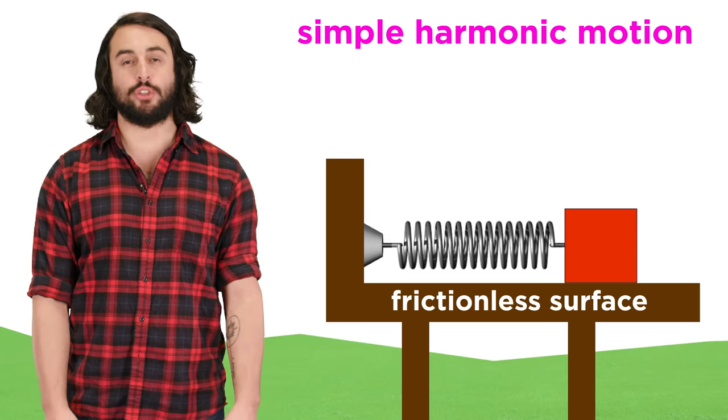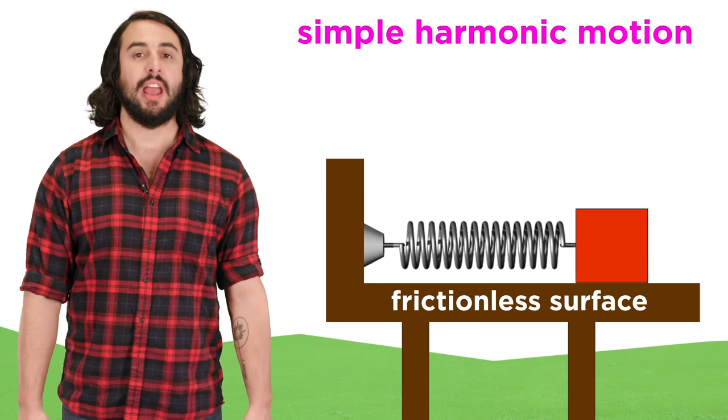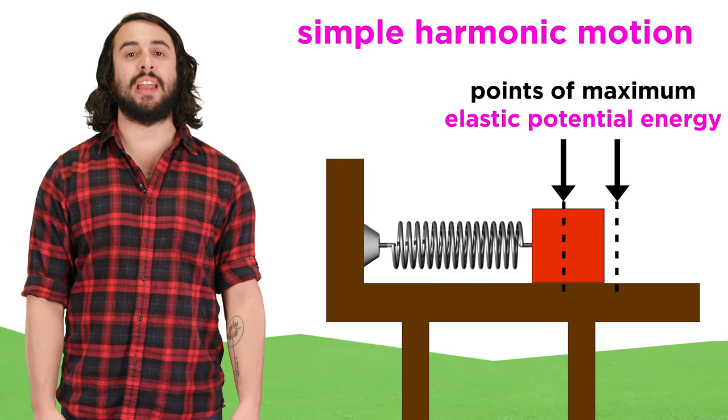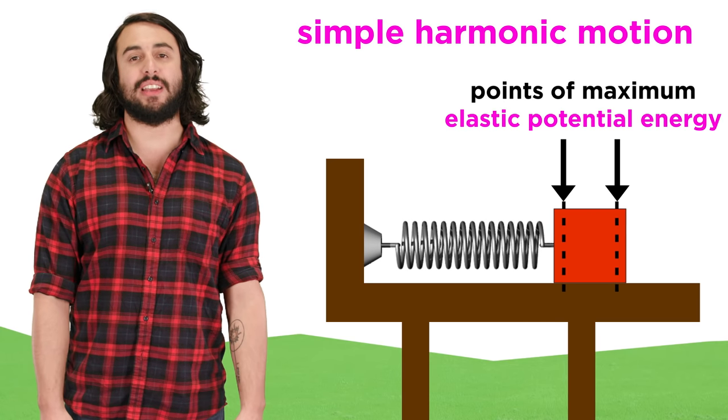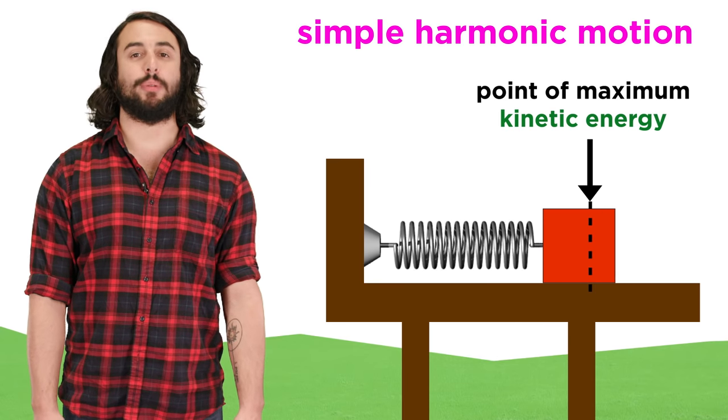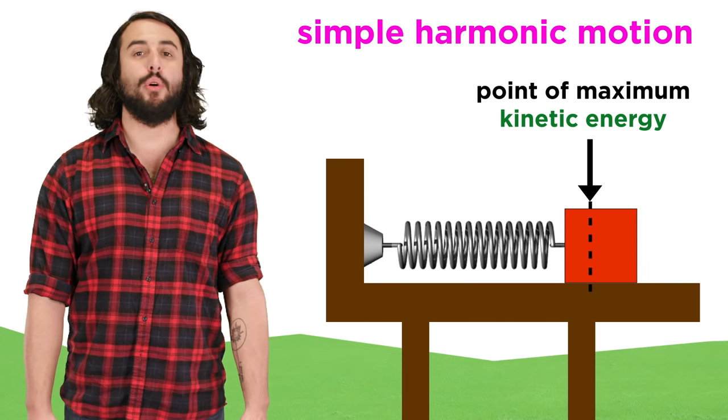If we assume that the surface of motion is completely frictionless, then the elastic potential energy reaches a maximum when the spring is most or least compressed, and the block is changing direction, while kinetic energy is at a maximum when the block is right in the middle and moving the fastest.